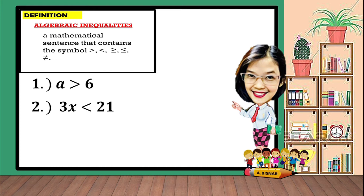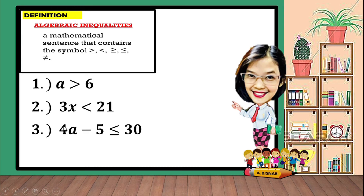Another: 3x is less than 21. The symbol being used is less than, which means that when you find the value of x and multiply it by 3, the answer must be less than 21. For number 3, 4a minus 5 is less than or equal to 30. The symbol being used is less than or equal to, which is a symbol for inequality.